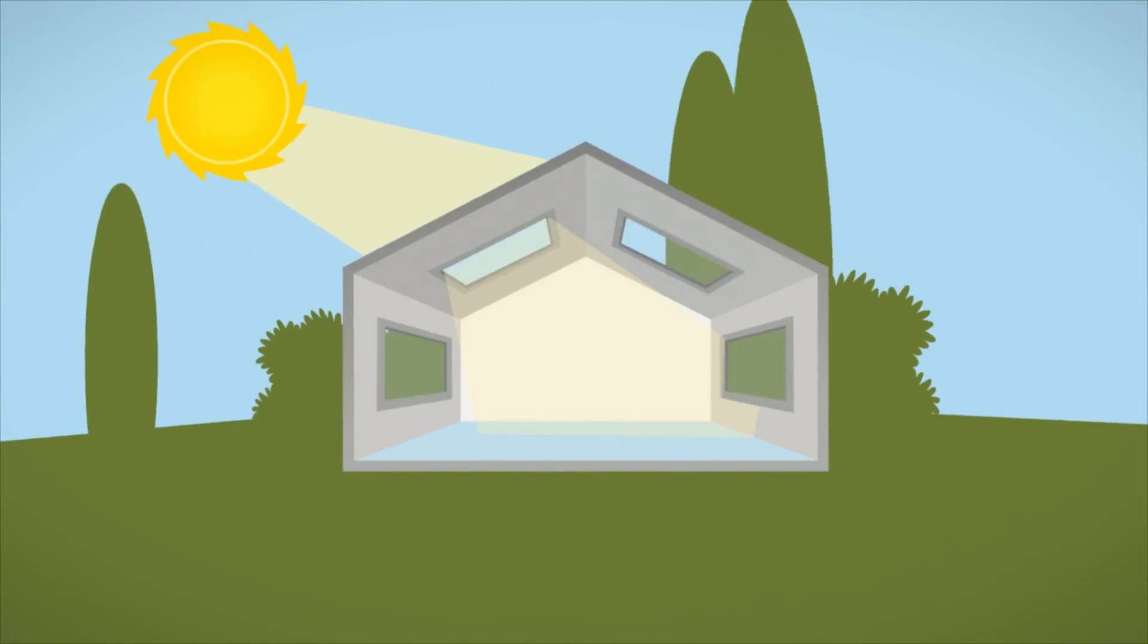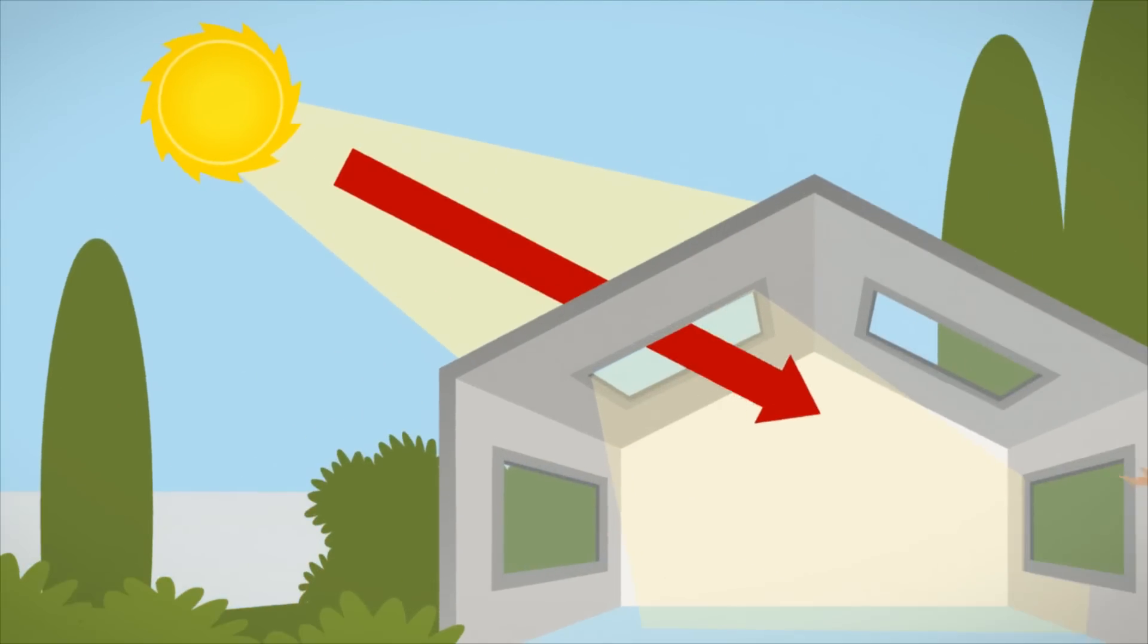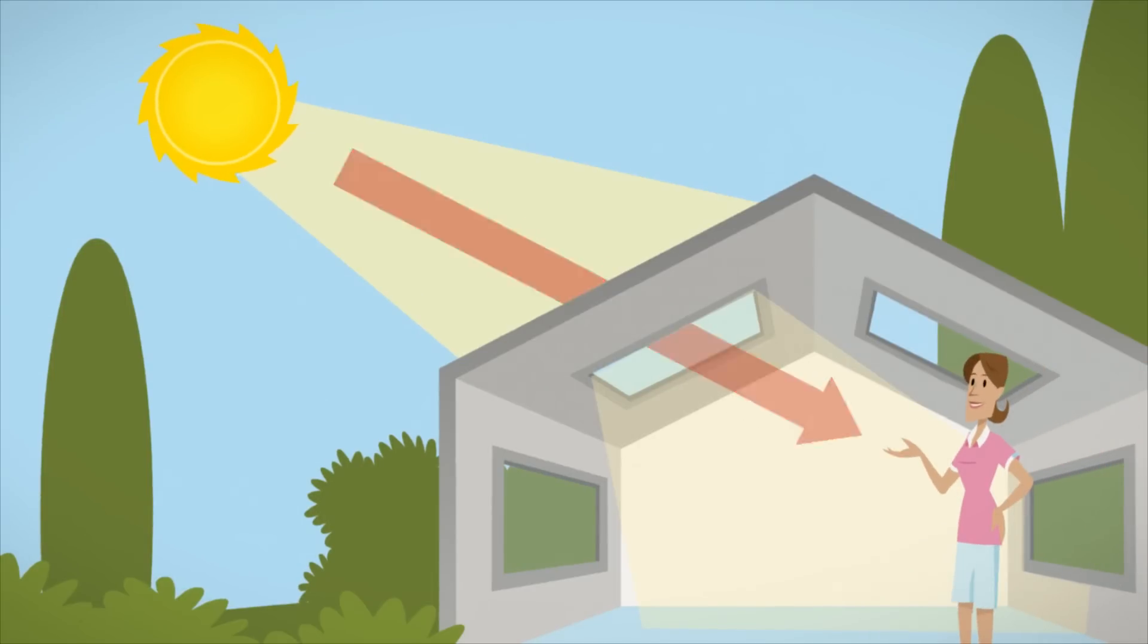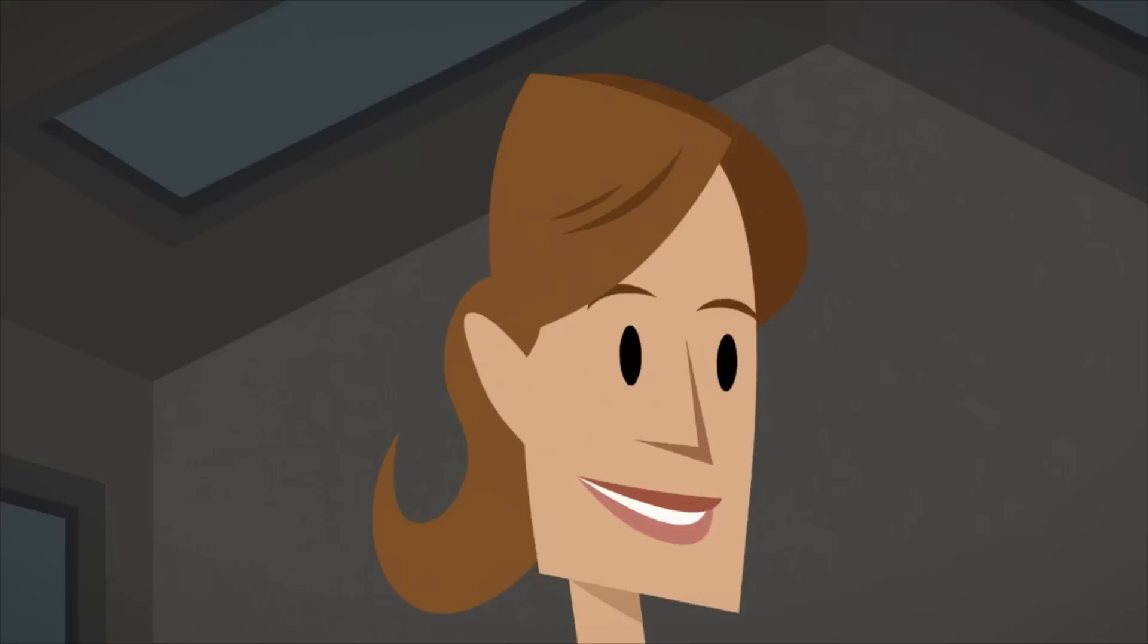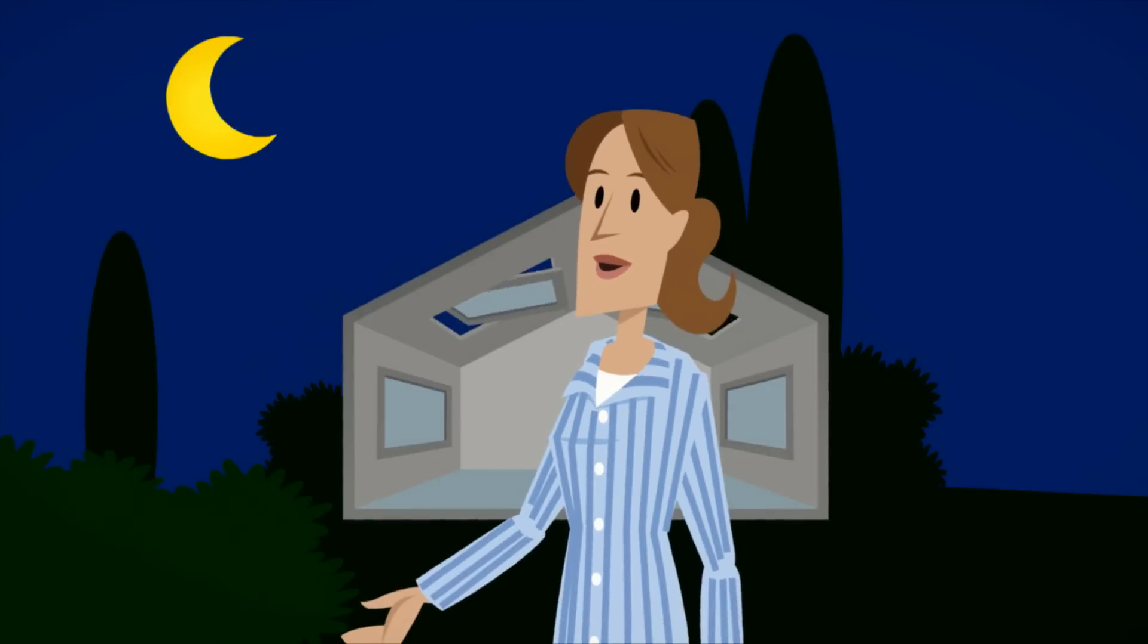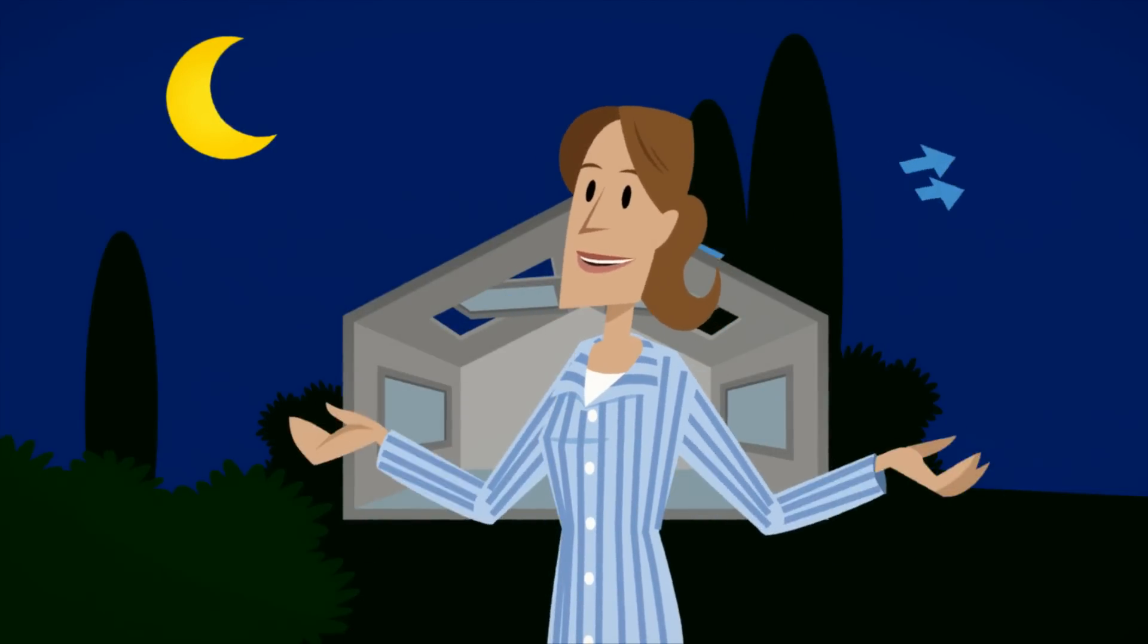But how does the energy balance work in practice? In the hot season, the sun heats your house, creating a cooling demand. Then you have to adjust the heat and brightness during the day. In the evening, you can create natural cooling ventilation with plenty of fresh air.